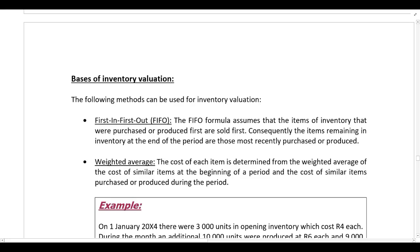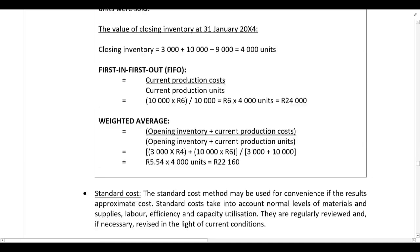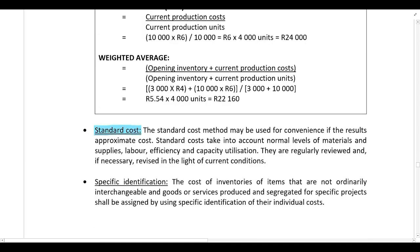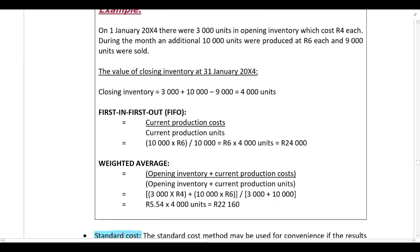The last area of IAS 2 to cover is the different bases of inventory valuation — the methods we can use to value inventory. There are four methods: first in first out (FIFO), the weighted average method, standard cost, and specific identification.